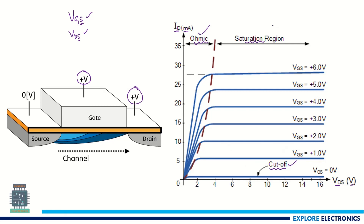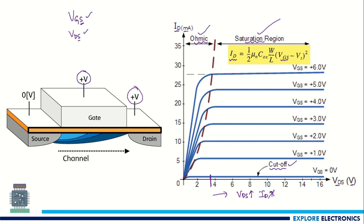But to operate the MOSFET as an amplifier, we need to keep the transistor operating in the saturation region. In the saturation region, ID depends on VGS, not VDS. Because from this point onwards, if VDS increases, current will not increase — current will be constant. So in this constant current region, if we fix VGS at 4 volts, this can be used as an operating point. We need to fix VGS so that we can expect a constant ID.